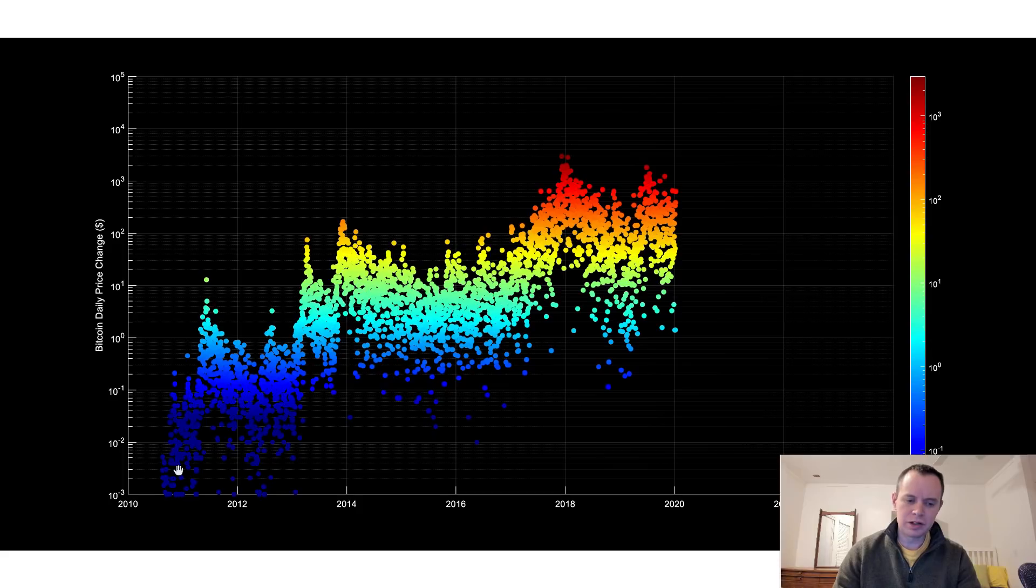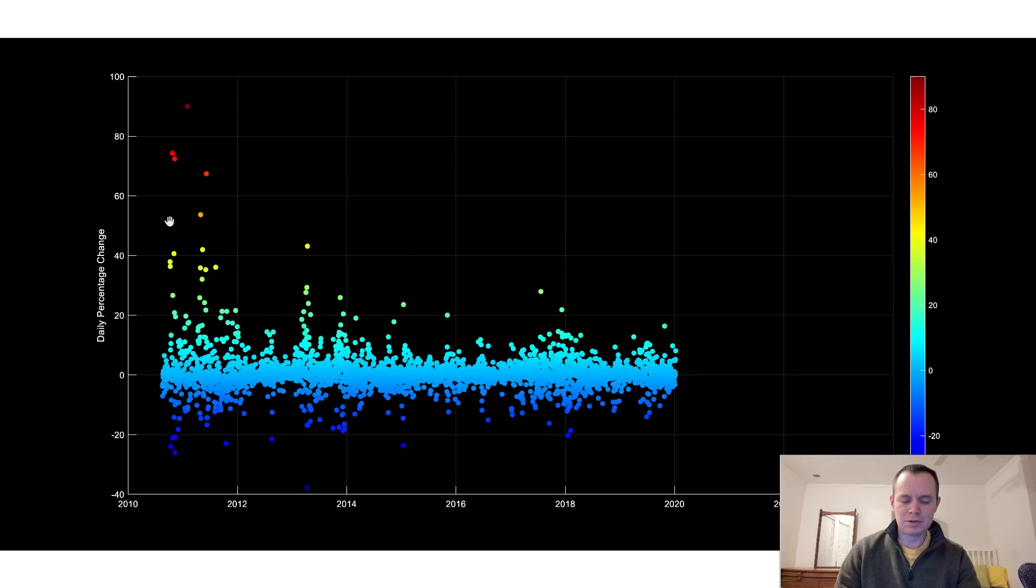It's just color coding it based on the price change. And I did that just so you could more naturally see regions that correspond to one another. For instance, this peak becoming kind of this median area, which has now become this low in terms of the magnitude of the price change.